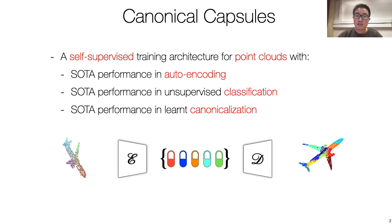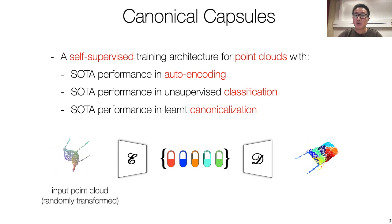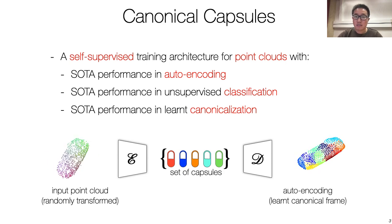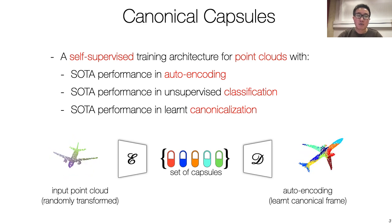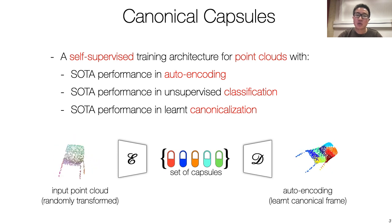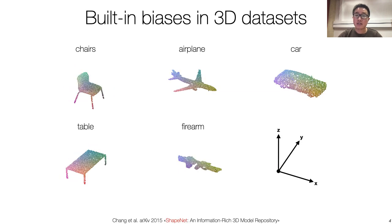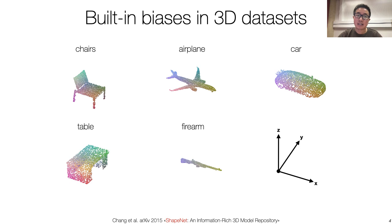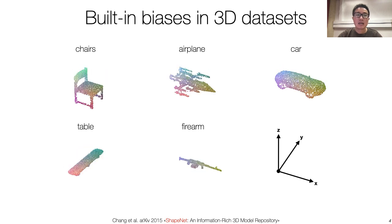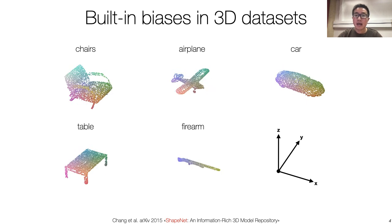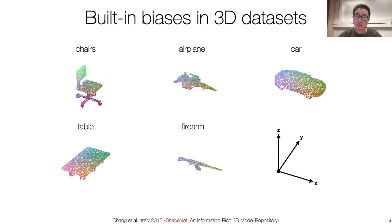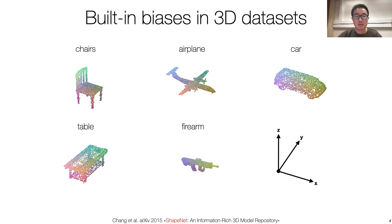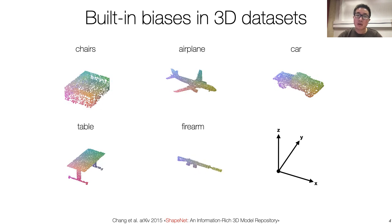Canonical Capsules receives the input of point clouds, encodes it as a set of capsules, and reconstructs its geometry in a learned canonical frame. Note that we make no assumptions about the orientation of the point clouds, neither at training or test time. But why are we interested in an architecture that can deal with randomly rotated and translated point clouds? Because most recent results in 3D deep learning have been enabled by strong built-in biases in the training dataset. For example,